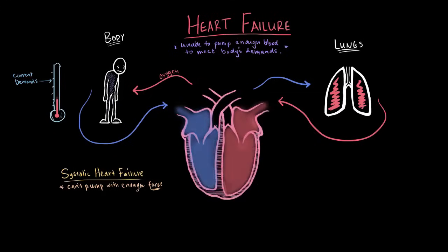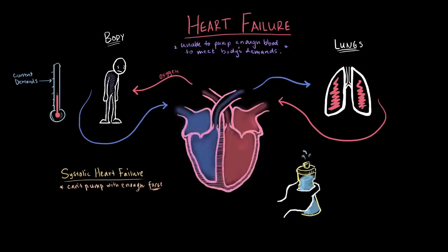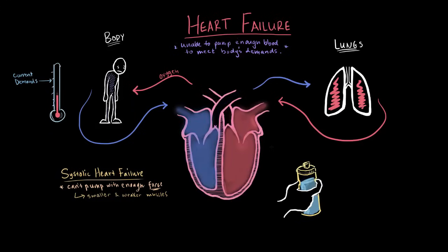With systolic heart failure, since your heart muscles are smaller, think about squeezing that water bottle again but just pinching it — it's going to be a lot harder to squeeze the water out. It's the same thing for the heart: smaller, weaker muscles make it way harder to squeeze and pump blood out. You can see this heart has enlarged-looking lower chambers and a really thin muscle wall, which are characteristic traits of a heart with systolic failure.